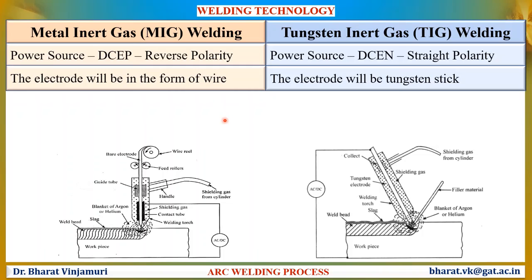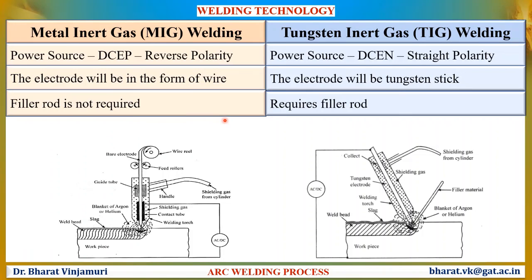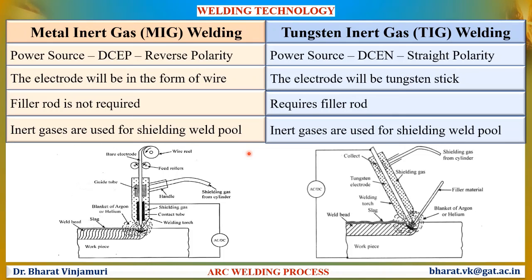The electrode is in the form of wire in MIG welding, but in TIG the electrode is a tungsten stick. Since MIG uses consumable electrodes, a filler rod is not required. But in TIG, which uses a non-consumable tungsten electrode, an additional filler metal is required to fill between the two metal plates. In both processes, inert gases such as argon or helium are used to shield the weld pool. TIG is widely used for micro welds and high precision welds, whereas MIG is widely used for high production rates.